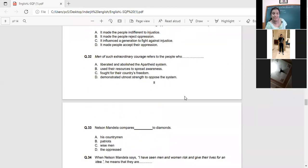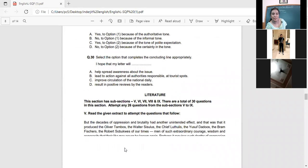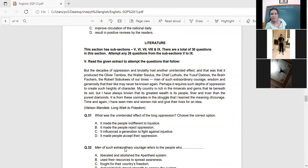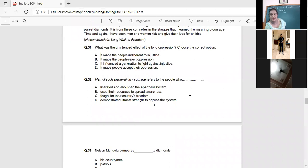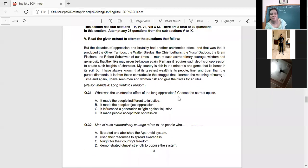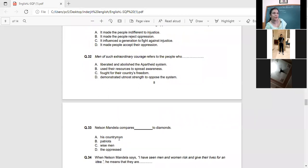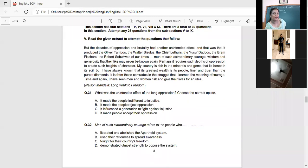Now the next question. Nelson Mandela compares dash to Diamond. His countrymen, patriots, wise men or the oppressed. Anyone in particular he compares? Look at it. Its greatest wealth is its people. Finer and truer than the purest diamonds. His patriots or his countrymen? Is Yuni talking about the patriots here or the countrymen? Countrymen. Yes, it's people. He's talking about everybody, that the people here are its greatest wealth. He's not talking only about the great people that he has referred to. So all the people are there.